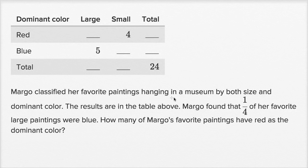Margot classified her favorite paintings hanging in a museum by both size and dominant color. The results are in the table above. We have this table with dominant color, large size, small size, and a bunch of blanks here. I'm guessing we're gonna have to fill some of these out.